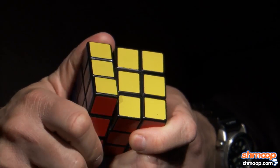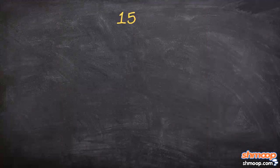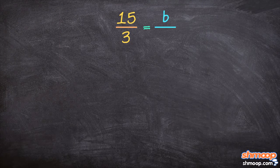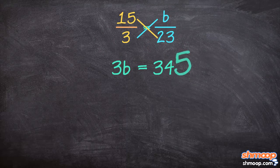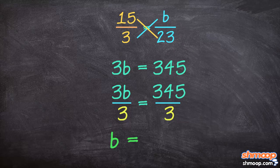We could have done the same thing if we'd left our fraction unsimplified. In that case, we would have had 15 over 3 equal to b over 23. By multiplying both denominators away, we'd get 3b equals 345. Then divide both sides by 3, and we get b equals — yep — still 115.